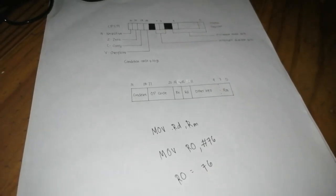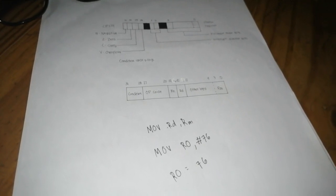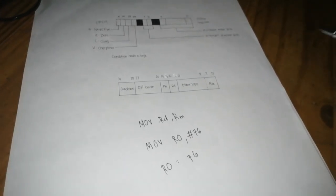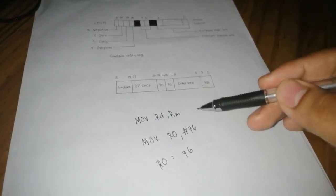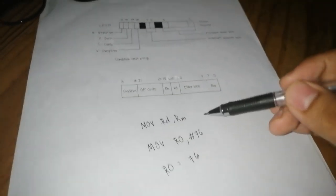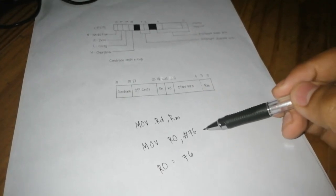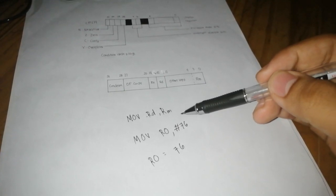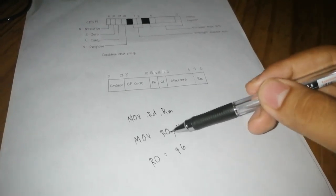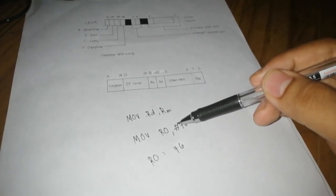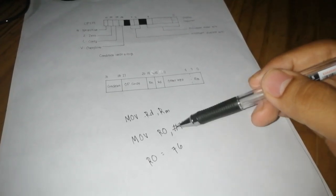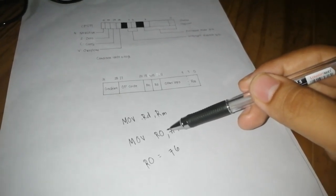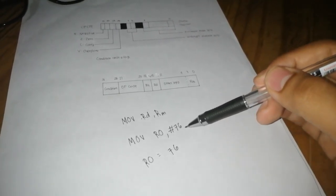So now I will show you the register instruction. Here is the example: we will move this number to register R0, simply just move R0 comma sharp 76, where R0 will have the value of 76.